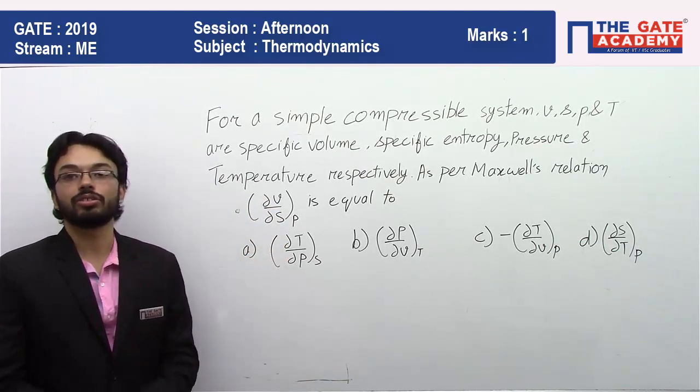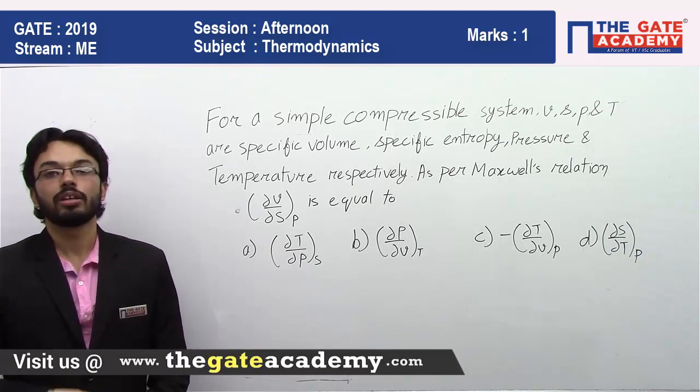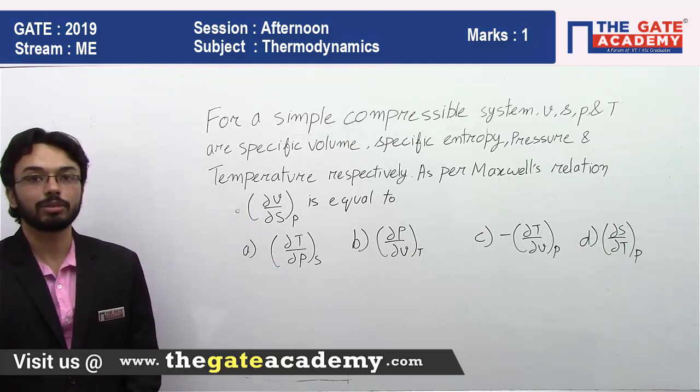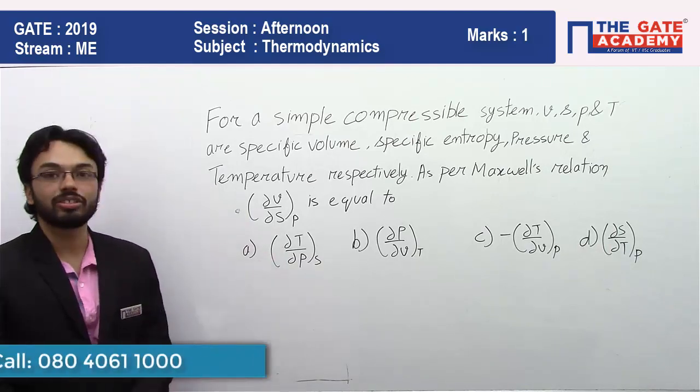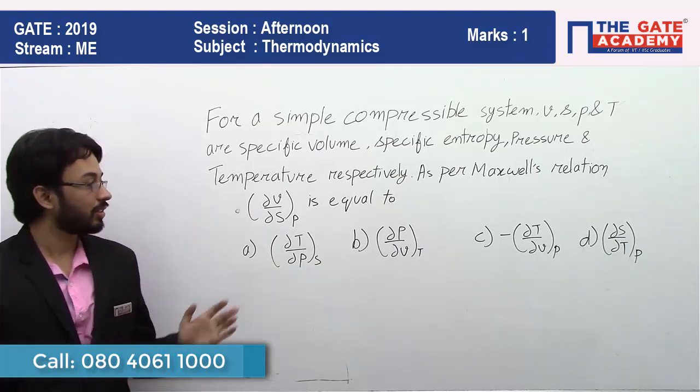This is the Maxwell relationship that you might find in your notes. You will find them in your notes. So this is the relationship and the option that is correct is A. There's nothing more to teach, this is just a formula based question where they are literally asking you the formula.